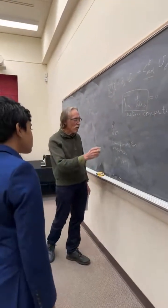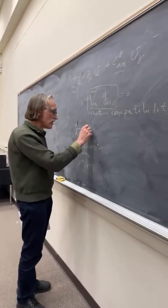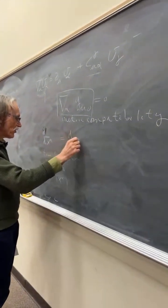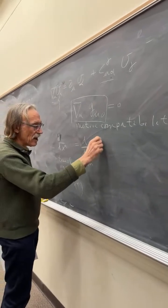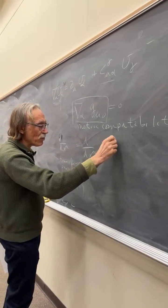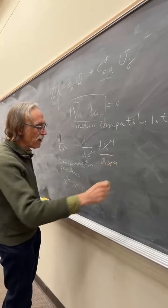And then, what are the derivatives? This you can write in terms of the new coordinates times dx mu prime dx mu by the chain rule.